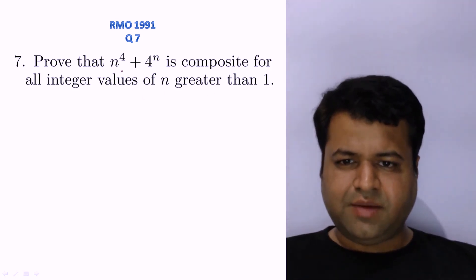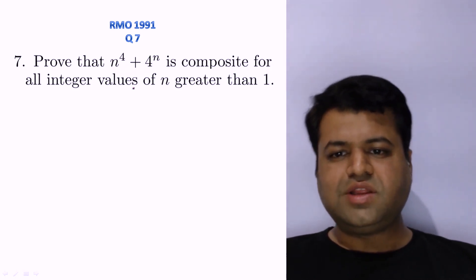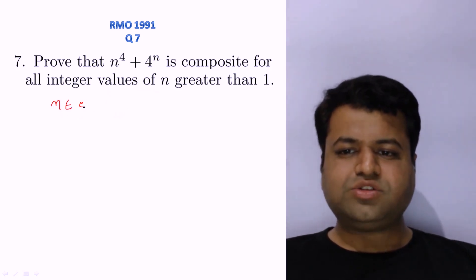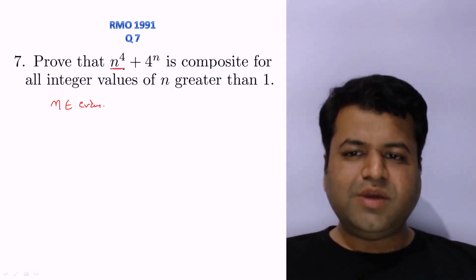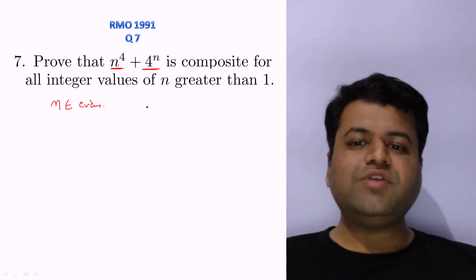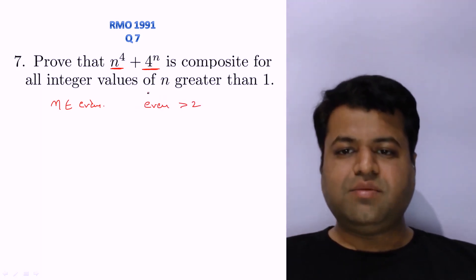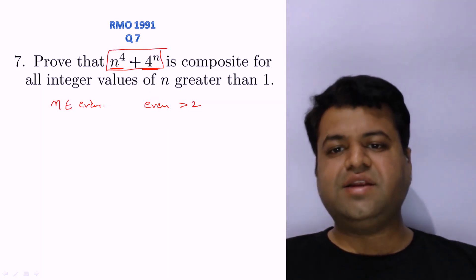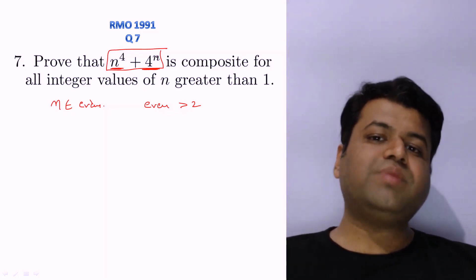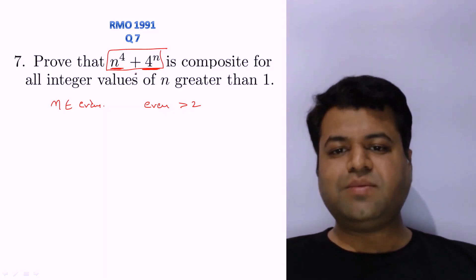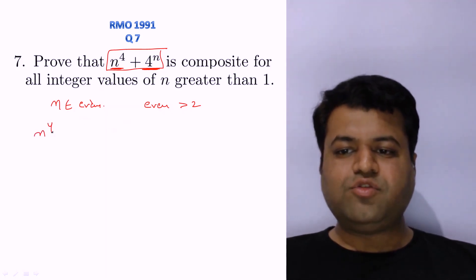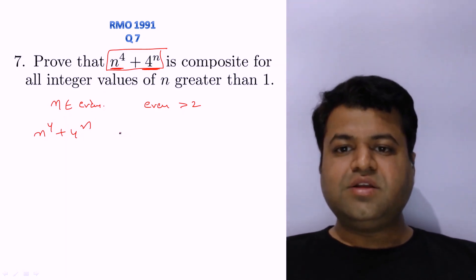We need to prove n⁴ + 4ⁿ is composite for all n greater than 1. First, if n is even, then n⁴ is even and 4ⁿ is also even, so the whole expression is even and greater than 2 — in fact divisible by 16. So for any even natural number n greater than 1, n⁴ + 4ⁿ is always even and composite.